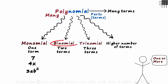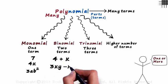An example of a binomial would be four plus x. The plus sign separates the terms. Another example would be three xy minus x.